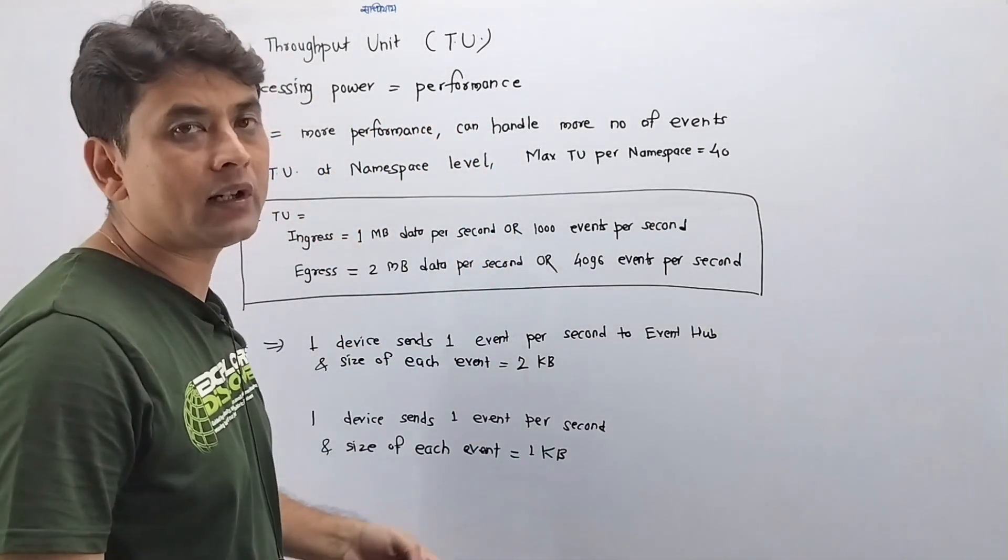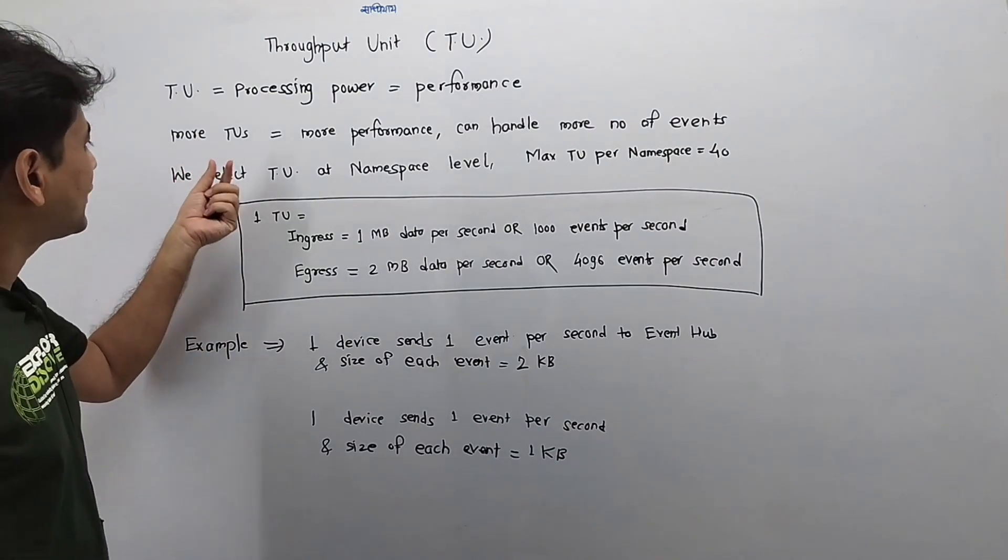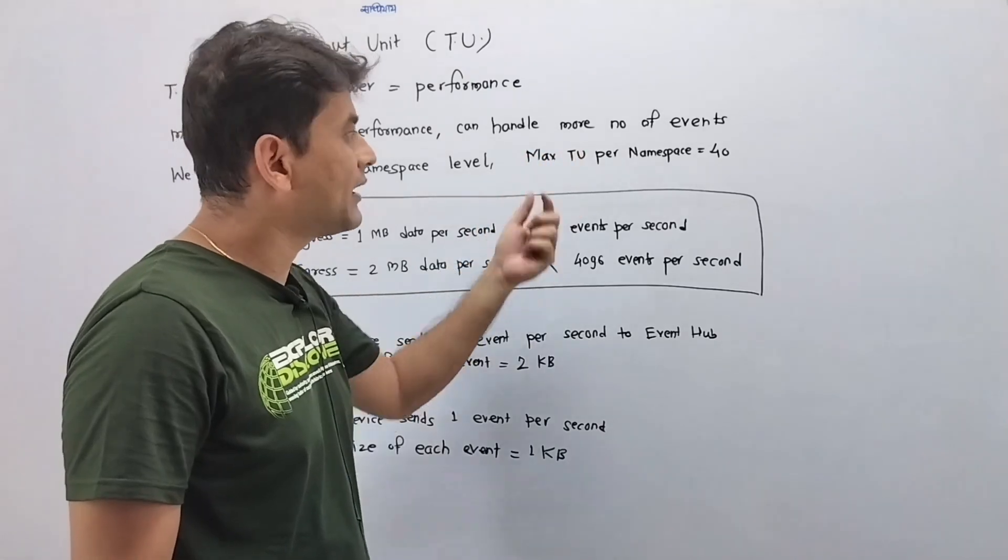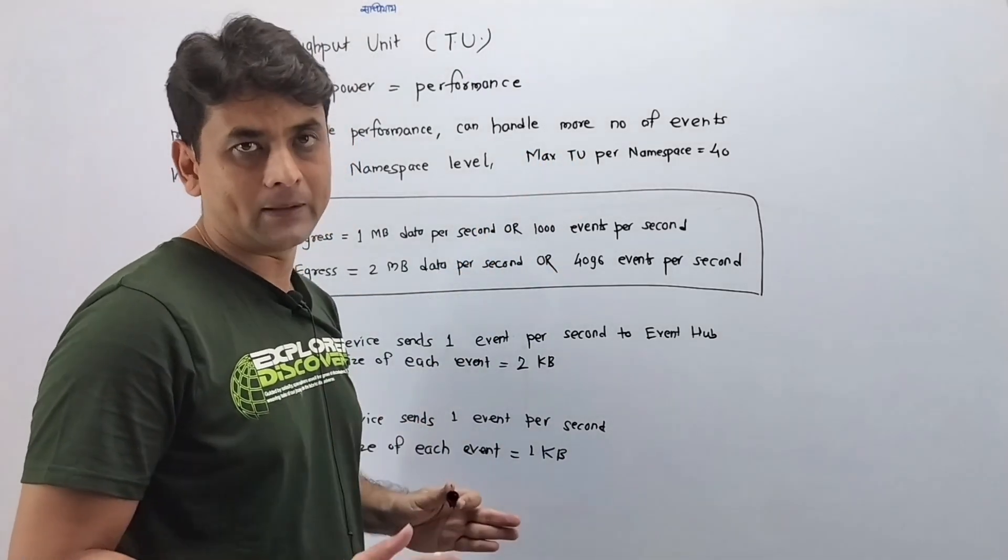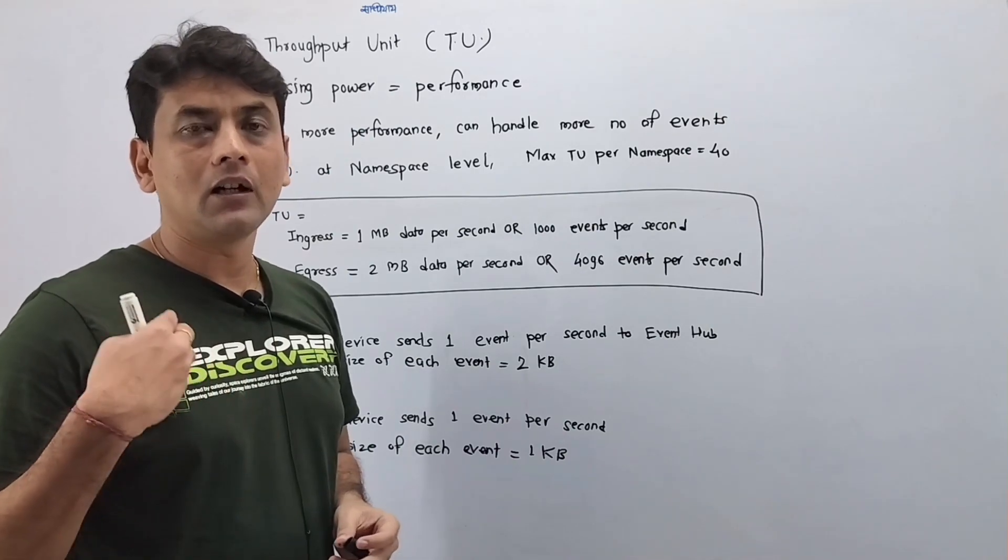Now, we select throughput units at the namespace level, and the maximum number of TUs per namespace can be 40. But what is this TU? I mean, we're saying TU is processing power, but what exactly does one TU contain?